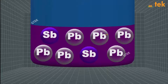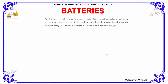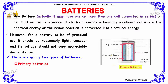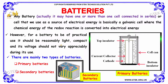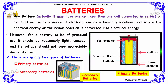Any battery or cell that we use as a source of electrical energy is basically a galvanic cell, where the chemical energy of the redox reaction is converted into electrical energy. However, for a battery to be of practical use, it should be reasonably light and compact, and its voltage should not vary appreciably during its use.